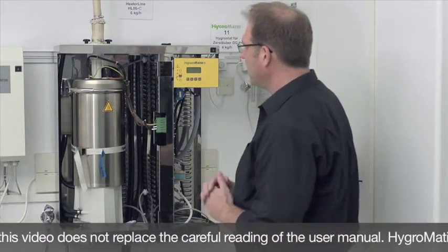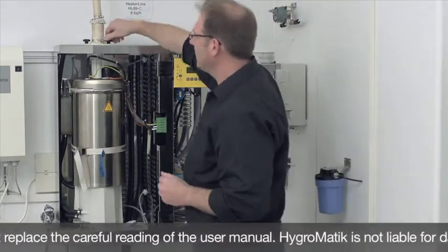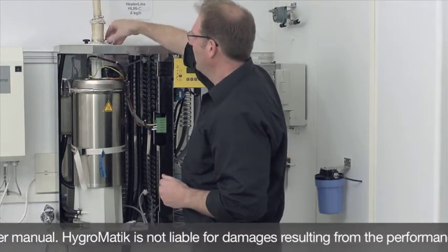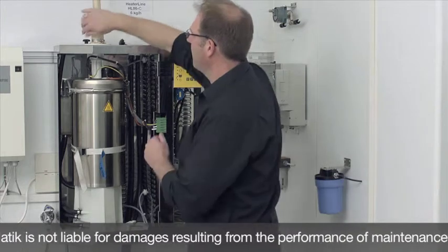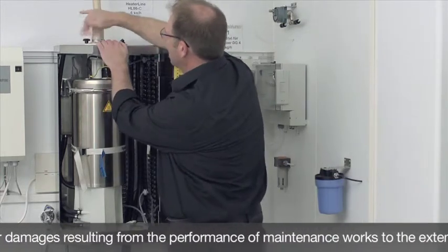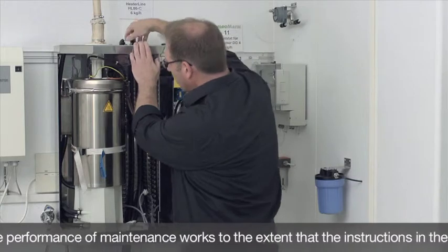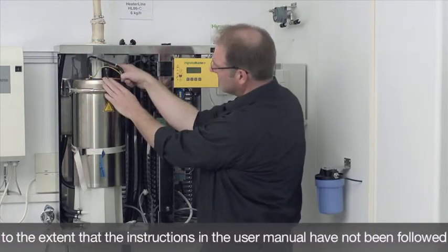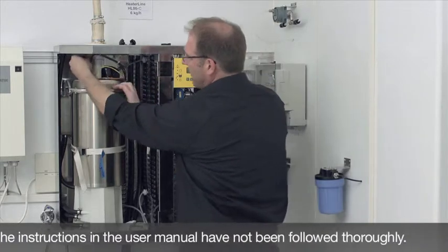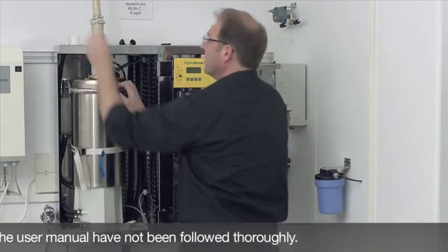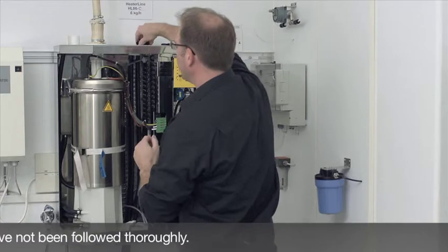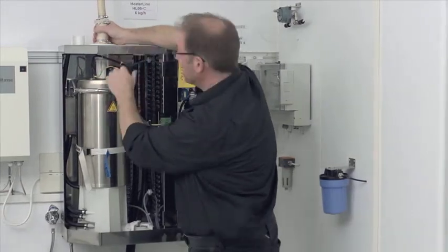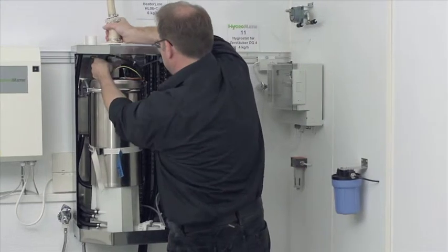I begin by disassembling the cylinder by first loosening the star screws on top here. And then here at the steam hose connector, that's the white plastic piece, I pull off the clip and place it up here at hand. I can reuse that shortly. And now I can already pull off the steam hose adapter together with the hose up at the top and out.